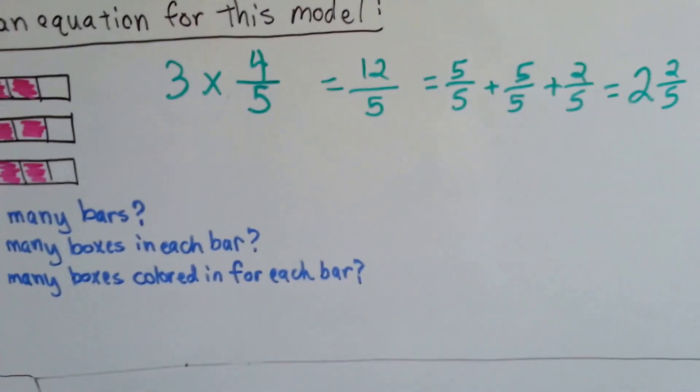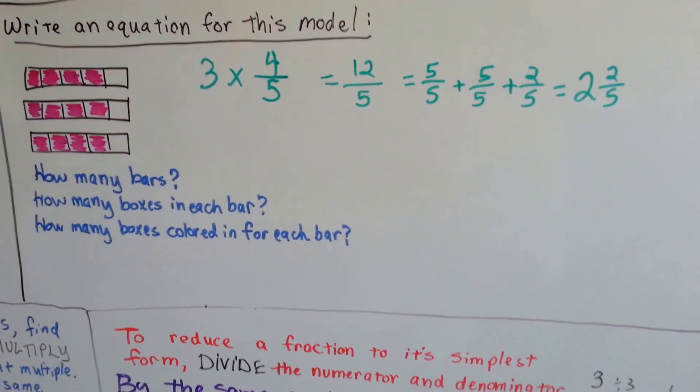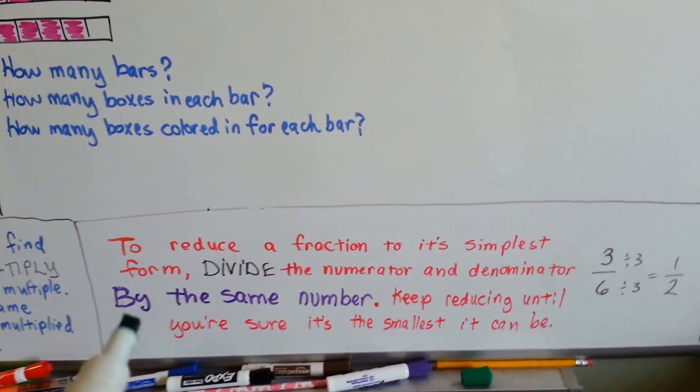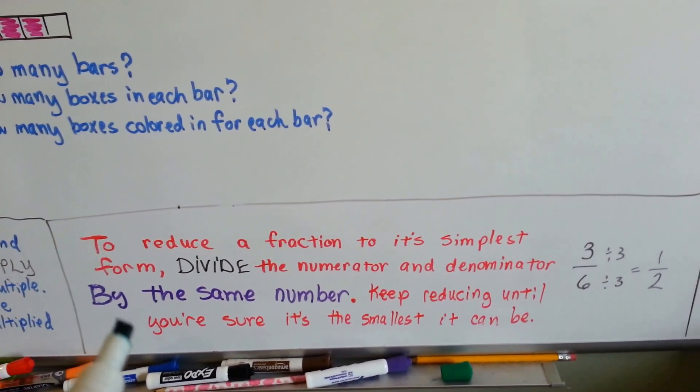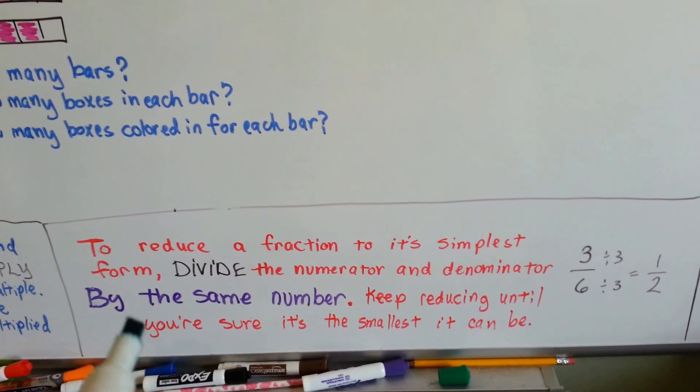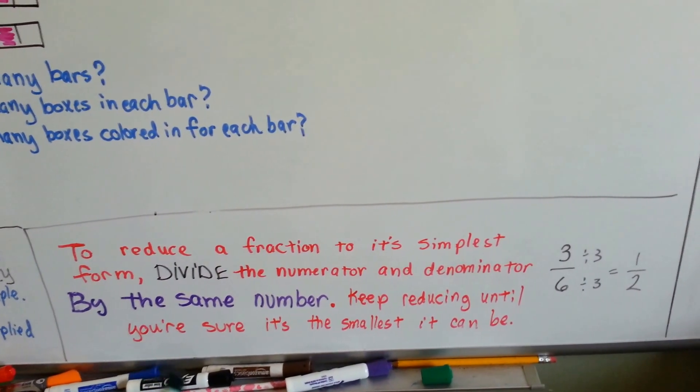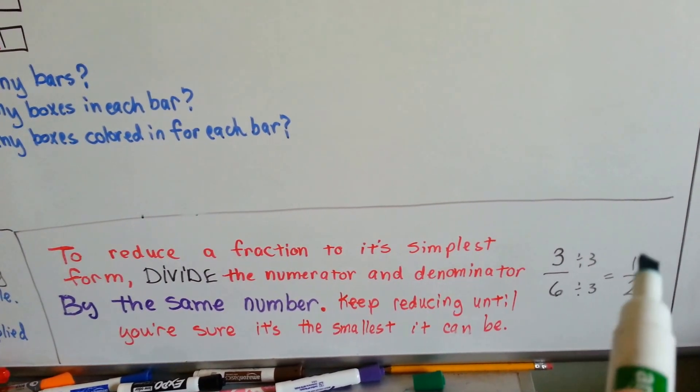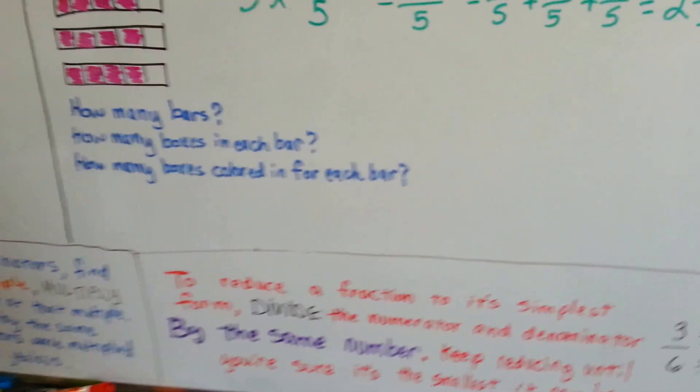Remember that when you're reducing a fraction to its simplest form, you divide the numerator and denominator by the same number, and you keep reducing until you're sure it's the smallest it can be. For example, three-sixths can be divided by three in both the numerator and denominator, and it'll become a half. Keep that in mind.